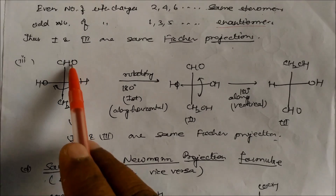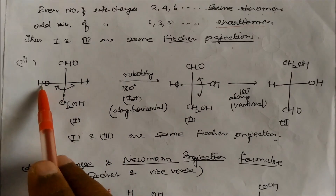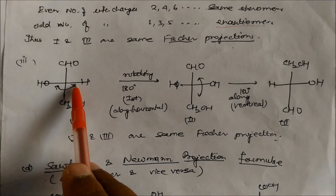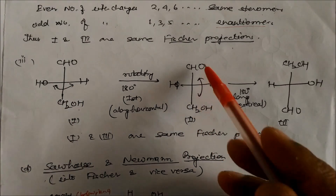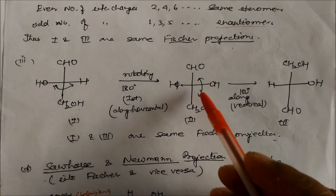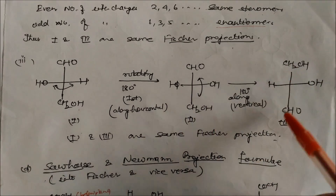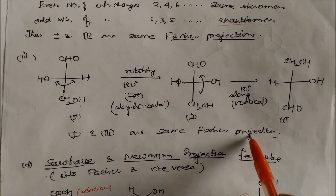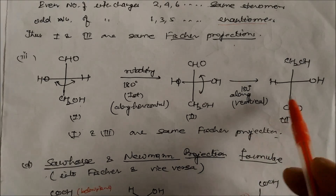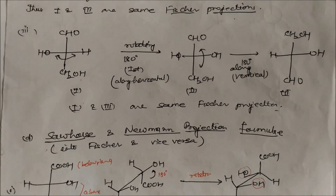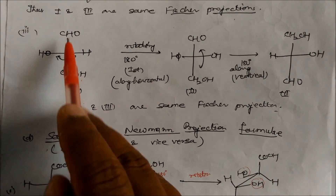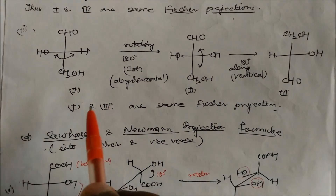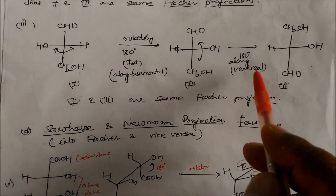For CHO, CH2OH, hydrogen, and OH: if you do 180° rotation you get an enantiomer, but if you then do further exchanges — one interchange here, one interchange there, two interchanges total — compounds 1 and 3 will again be the same Fischer projection. Rule summary: odd number of interchanges gives enantiomers; even number gives the same stereoisomer. There is also horizontal rotation and vertical rotation to consider.